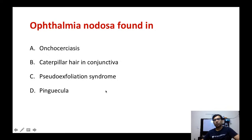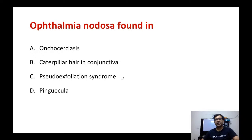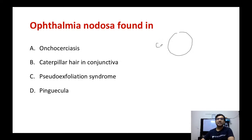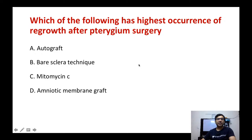Next question: ophthalmia nodosa is found in which of the following — onchocercus, caterpillar hair in the conjunctiva, pseudoexfoliation syndrome, or pinguecula? Ophthalmia nodosa occurs due to a foreign body reaction forming a nodule inside the conjunctiva. It is caused by caterpillar hair in the conjunctiva, which triggers an inflammatory reaction.